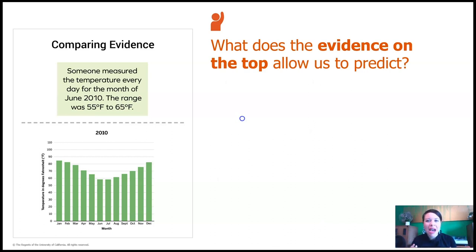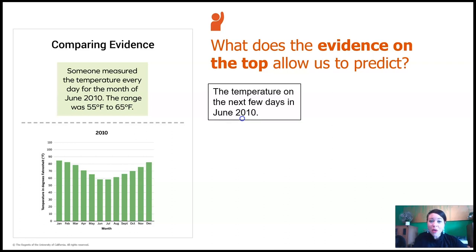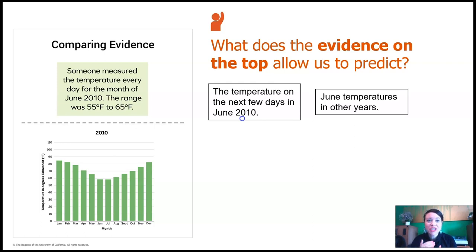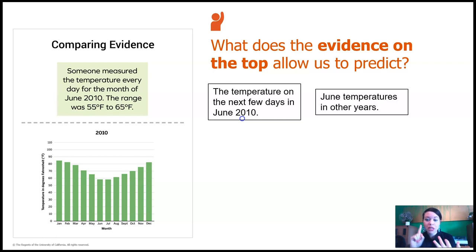What does the evidence on the top allow us to predict? We could use it to predict the temperature on the next few days of that month in 2010, and we could also predict the June temperature in other years. If it was between 55 and 65 degrees Fahrenheit in June 2010, we could expect the same in June 2011, June 2012, June 2020, June 2030 — but only for the month of June.